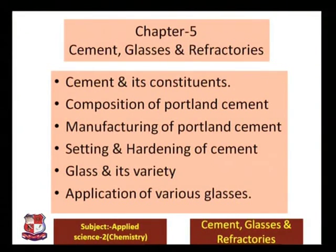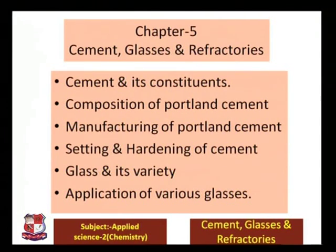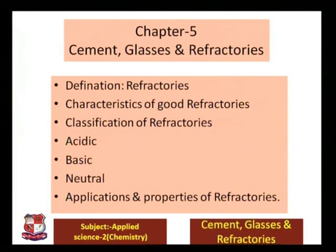Let us discuss the contents of the syllabus. In this chapter, we will be discussing Cement and its constituents, Composition of Portland Cement, Manufacturing of Portland Cement, Setting and Hardening of Cement, Glass and its Variety and Various Applications of Glasses. Then we will see the Definition of Refractories, Characteristics of Refractories, and we will classify Refractories into 3 categories: Acidic, Basic, and Neutral. We will also study the Applications and Properties of Refractories.